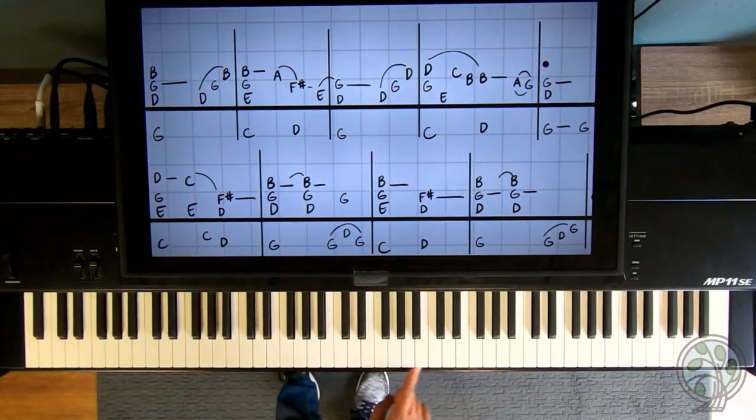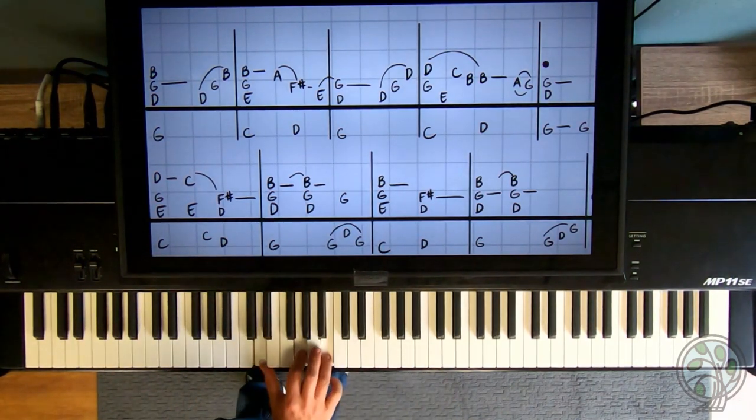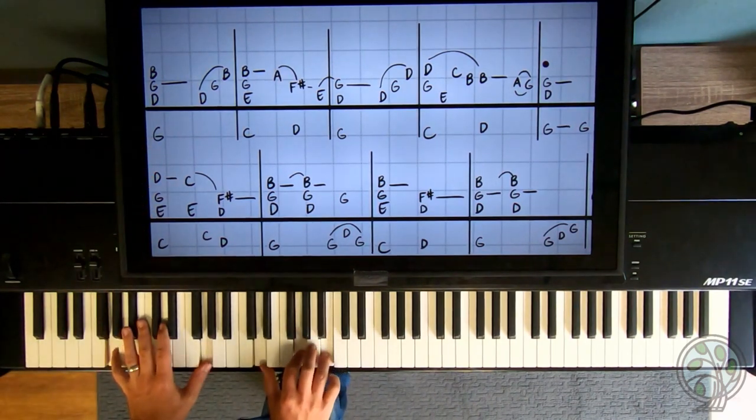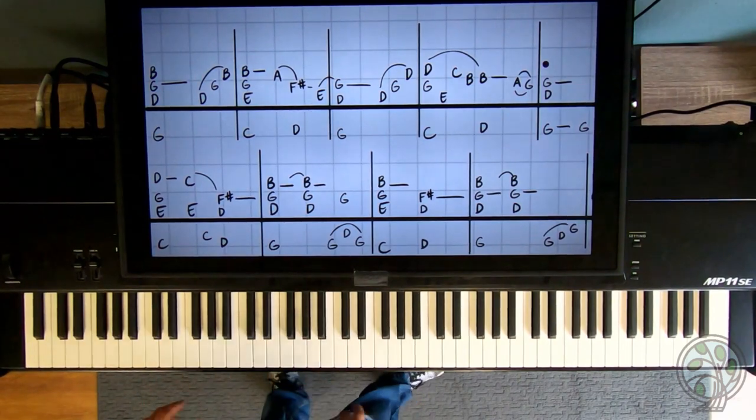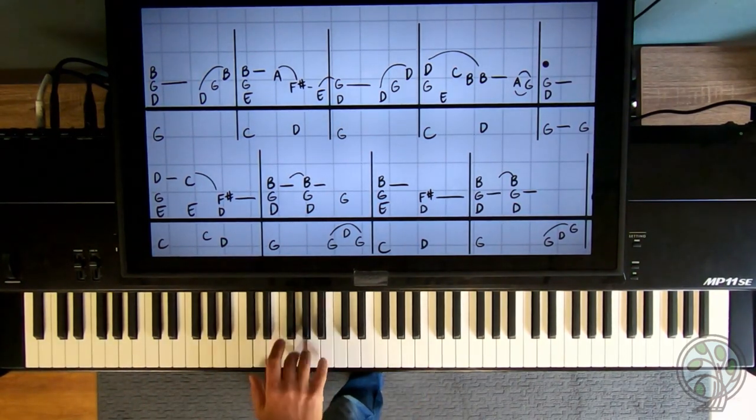Start off with a G chord. So we're below middle C. D, G, B, one, two, four. Left hand's on a G octave. We're going to count to three. One, two, three, and four, and.